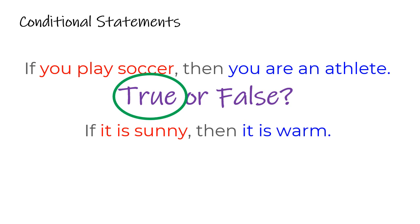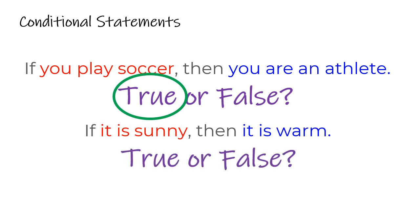What about this one: if it is sunny, then it is warm. Is that true or false? Well, in most cases this would probably be true — if it's sunny you'd think it's warm. But think about a case where it might be sunny but not warm. What if it's February and it's 30 degrees outside? Could it still be sunny? Yes. So just because it's sunny doesn't necessarily mean it's warm all the time. Because we found an example in February where it might be sunny and not warm, this has to be a false statement — it's not true all the time.